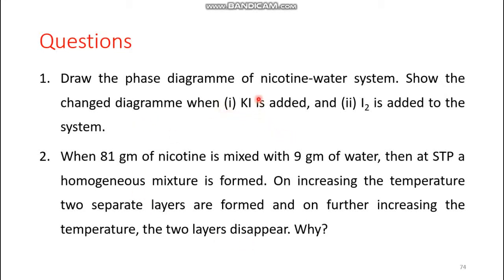Potassium iodide is a polar compound — it is an electrolyte and can only dissolve in water, not in nicotine. Since it is soluble in only one of the components, the mutual solubility decreases. The upper CST rises and the lower CST falls.